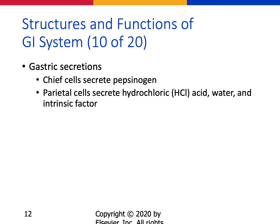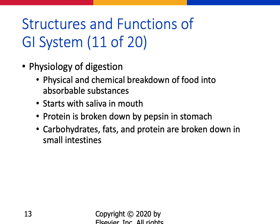This slide covers gastric secretions. The chief cells create pepsinogen and the parietal cells secrete hydrochloric acid, water, and the intrinsic factor — essentially the chemical stew in your stomach that does the chemical breakdown. Food is chemically and physically broken down starting with saliva in the mouth; pepsin works on protein in the stomach, while the small intestines also handle protein, carbohydrates, and fats.